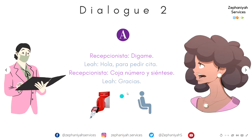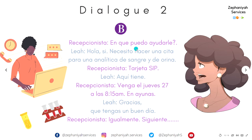Otro diálogo. — Dígame. — Hola. ¿Para pedir cita? — Coja un número y siéntese. — Gracias. — ¿En qué puedo ayudarle? — Hola. Sí, necesito hacer una cita para una analítica de sangre y de orina. — Tarjeta SIP. — Aquí tiene. — Venga el jueves 27 a las 8 y cuarto de la mañana. En ayunas. — Gracias. Que tengas un buen día. — Igualmente. — Siguiente. Muy bien.